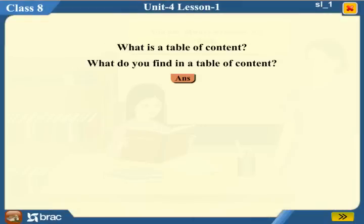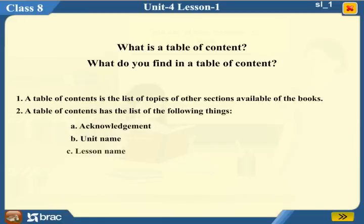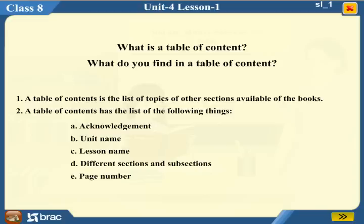What is a Table of Contents? What do you find in a Table of Contents? A Table of Contents is the list of topics or other sections available in the book. A Table of Contents has the list of the following things.